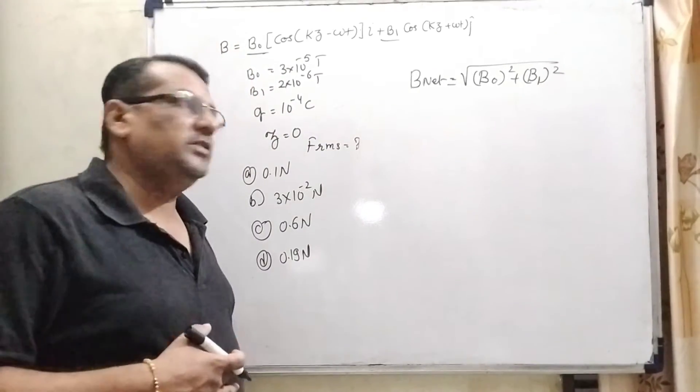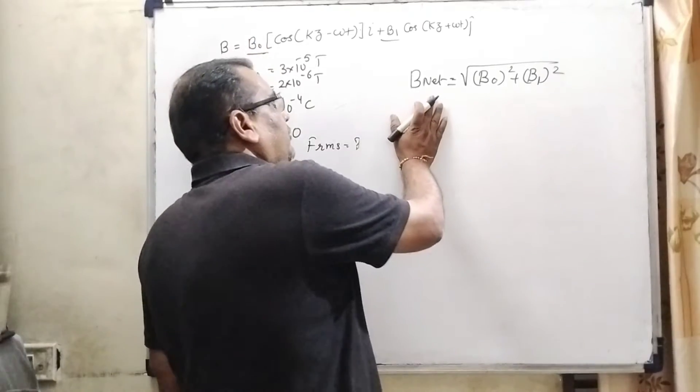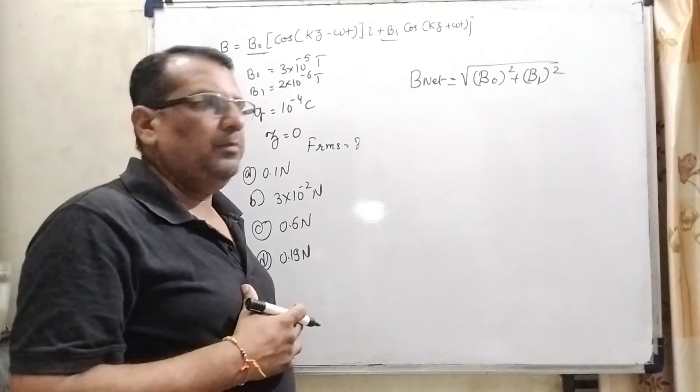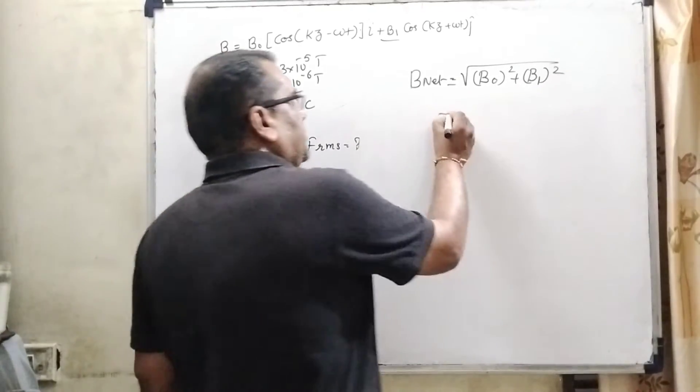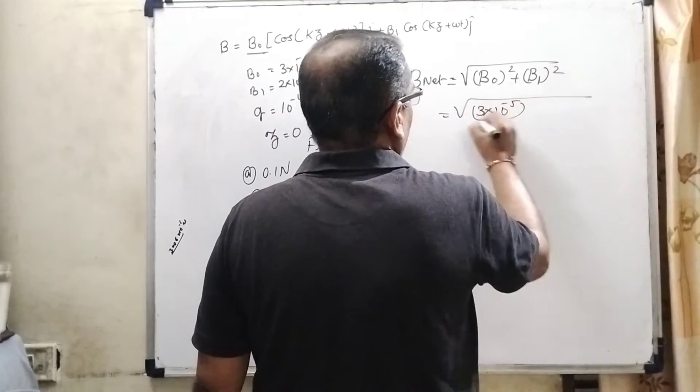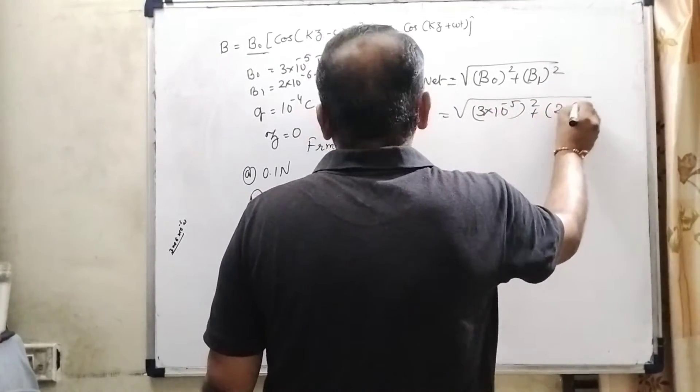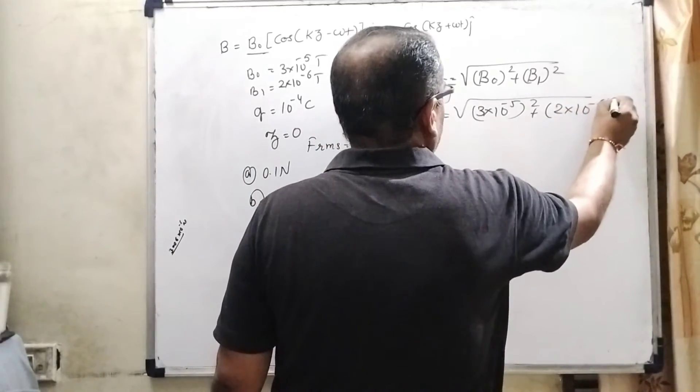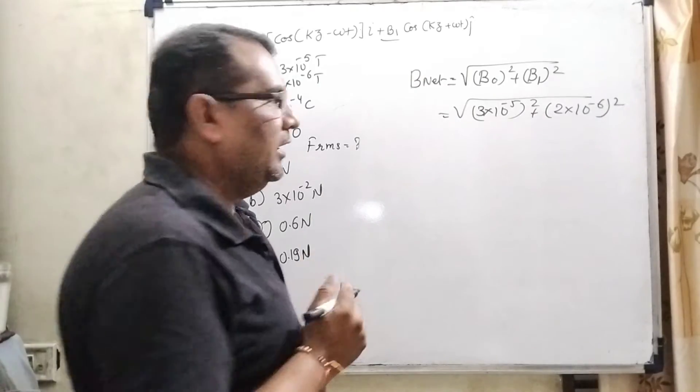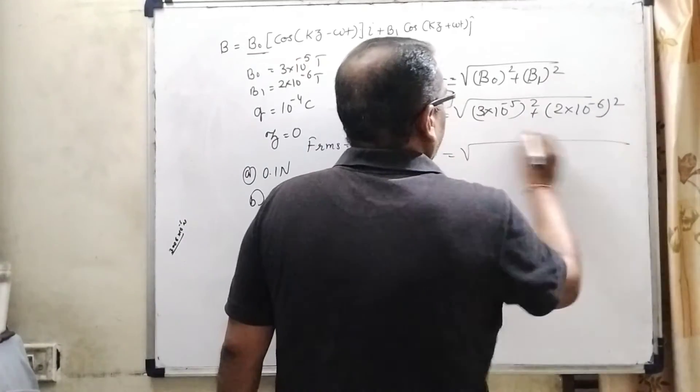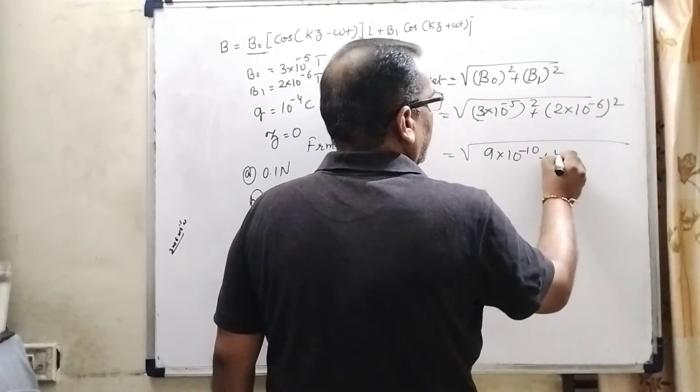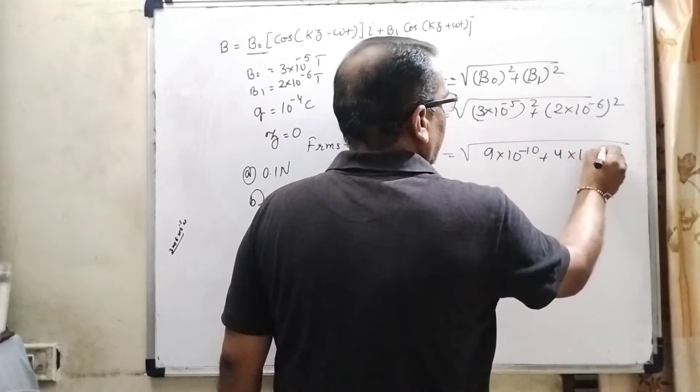Now, as per our working process, let us first find out net magnetic field. Net magnetic field equal to root B₀ square plus B₁ square. Now, substitute the value of B₀ that is 3 into 10 raised to power minus 5 whole square and B₁ that is 2 into 10 raised to power minus 6 square. Let us see how we can calculate without calculator. It is very easy. That is 3 square is 9, 10 raised to power minus 10, plus 2 square that is 4 into 10 raised to power minus 12.